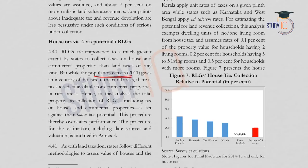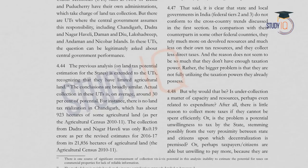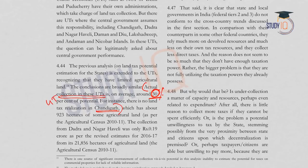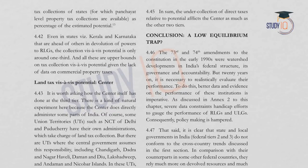The 2011 population census provides an inventory of houses in rural areas, but no such data is available for commercial properties, which is a major drawback. In Union Territories, actual tax collection is on average 30% — for example, Chandigarh has no land tax realization. This undercollection of direct taxes affects not only the centre but all three tiers — the centre, states, and local governments.